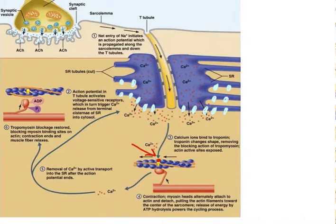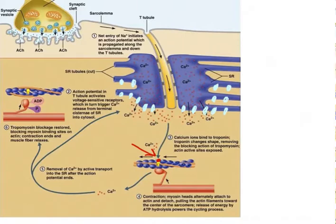Once the calcium is off the troponin, the tropomyosin then undergoes a conformational change and it moves back over to its resting spot, covering the myosin binding site on the actin, preventing the myosin heads from binding to the myosin binding site on the actin.